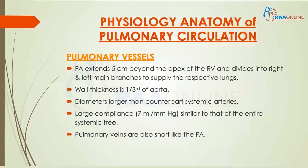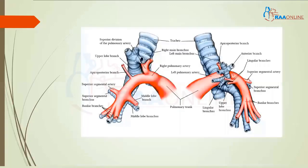The pulmonary veins drain into the left atrium. This picture shows the pulmonary trunk, which divides into the right pulmonary artery and the left pulmonary artery, supplying the respective segments of the tracheobronchial tree. Once the blood gets oxygenated from the pulmonary arteries, it enters the pulmonary vein, and from there into the left atrium and into the left ventricle, supplying the whole body.